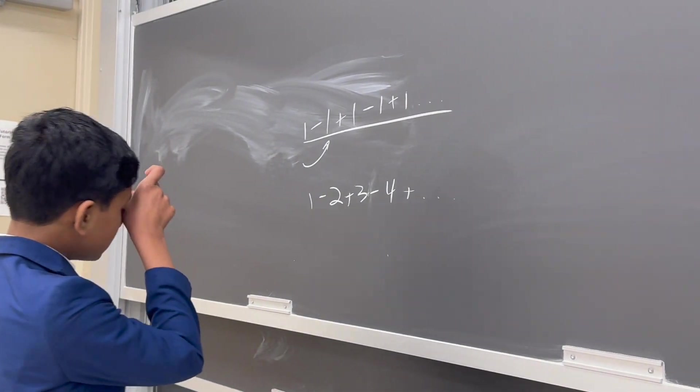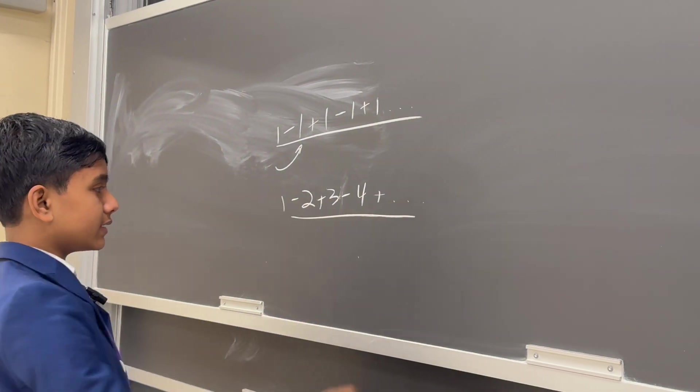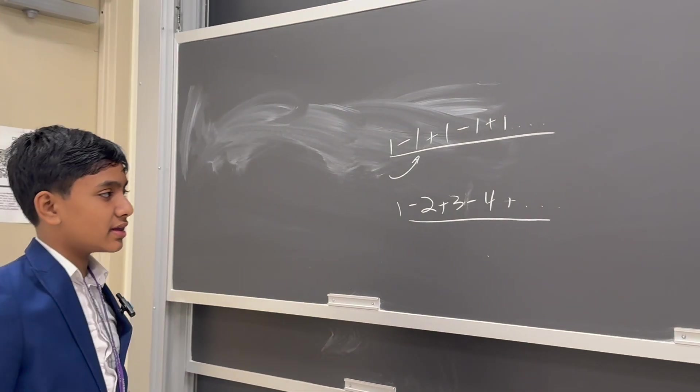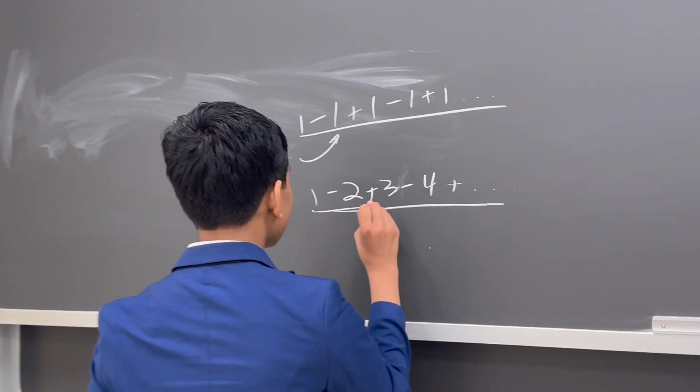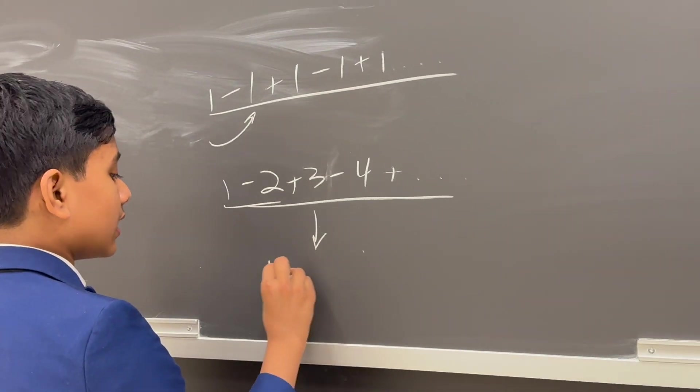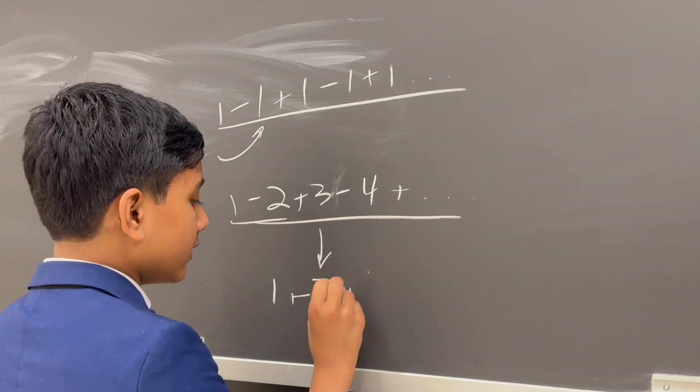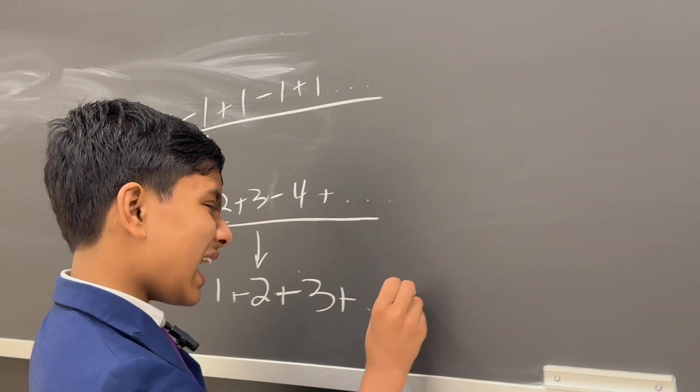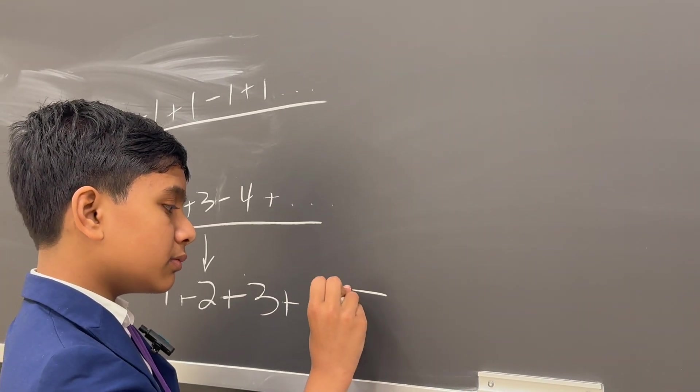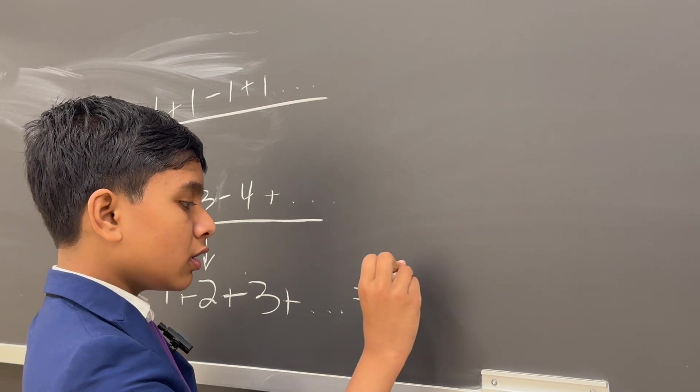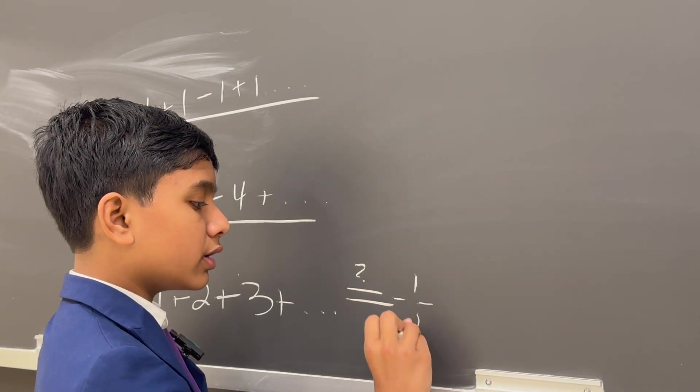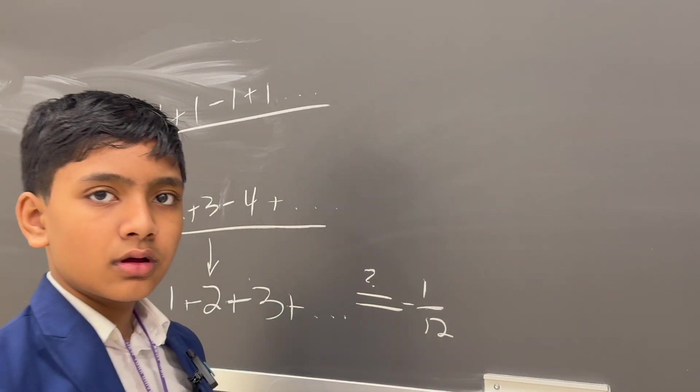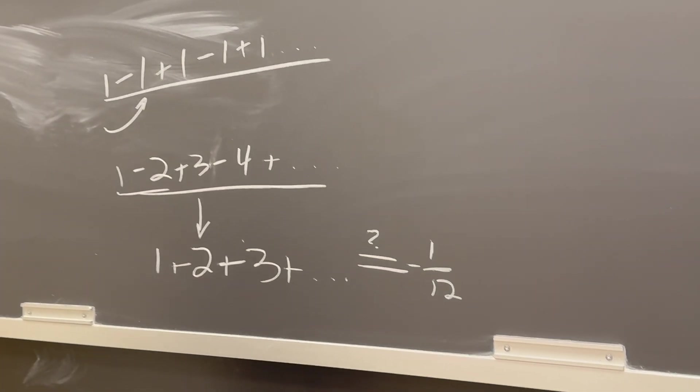So today, we aim to provide some insight into that, as well as some other methods for summing this up. And finally, this allows us to get a good heuristic reason for why 1 plus 2 plus 3 plus dot dot dot technically sums up to minus 1 over 12. Alright, so let's get into it.